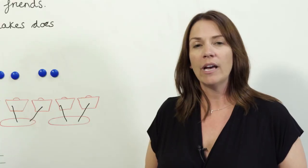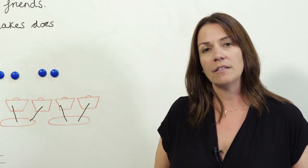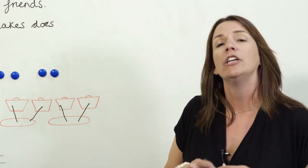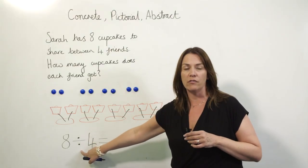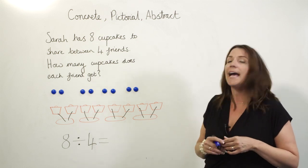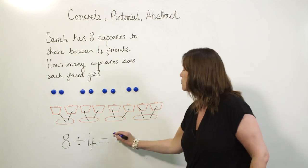And finally we come to the abstract stage. Once children have shown that they understand a concept the teacher can introduce abstract things such as symbols. In this case it would be the division symbol and for this calculation we would be looking at eight divided by four equals two.